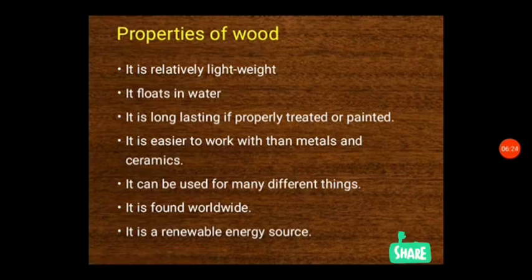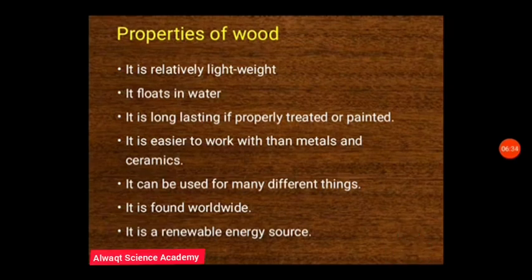Wood is described as a renewable source of energy because it is constant in supply. There has never been a time, and there will never be a time, when we can say wood is exhausted. It cannot be exhausted, and that is why it is described as a renewable energy source.